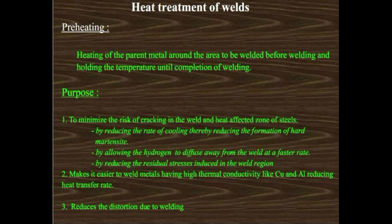Cracking can include hydrogen induced cracking. If cooling is not done at the proper rate, cracking will occur. By reducing the rate of cooling, we reduce the formation of hard martensite — if hard martensite forms, it will crack. The second reason is by allowing hydrogen to diffuse away from the weld at a faster rate — by heating the parent metal outside the weld, hydrogen diffuses out and hydrogen cracking will not occur.